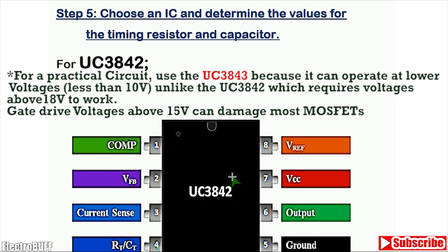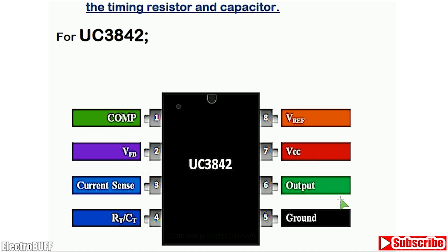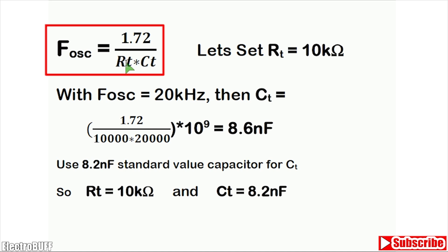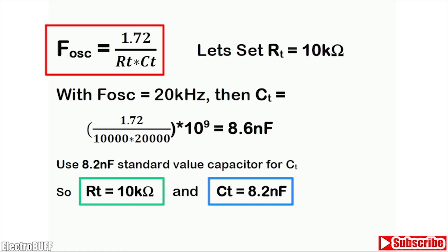This is the pinout of the UC3842. It can operate at high frequency without needing a dedicated gate drive IC, and it has an 8-pin package. For the UC3842, the output frequency is set by the formula 1.7 divided by (R_T × C_T), where R_T and C_T are the timing resistor and capacitor. From the datasheet you can check the limits. If I set the timing resistor to 10 kilohms with a frequency of 20kHz, then C_T equals 1.7 divided by (R_T × F), giving 8.6 nanofarads. With these two values you should get an operating frequency of at least 20kHz.